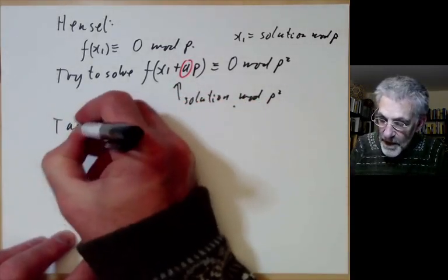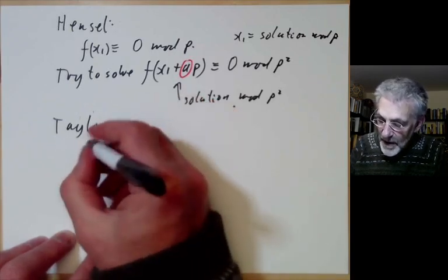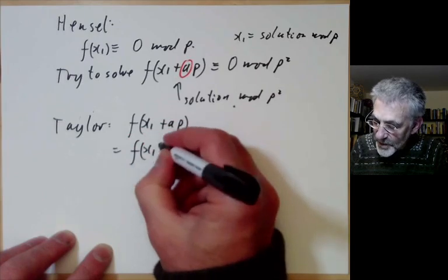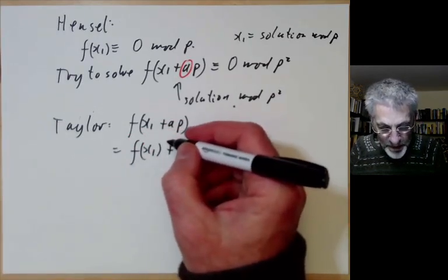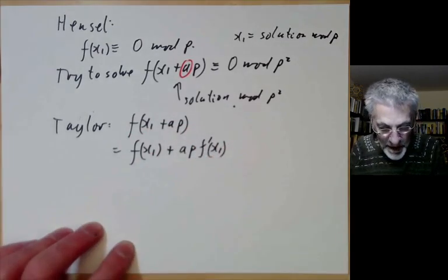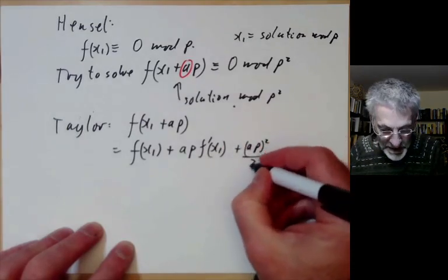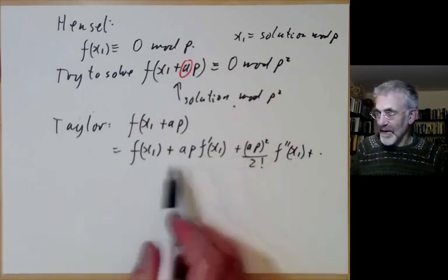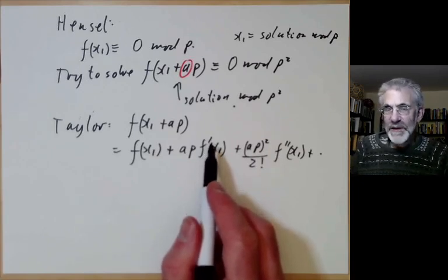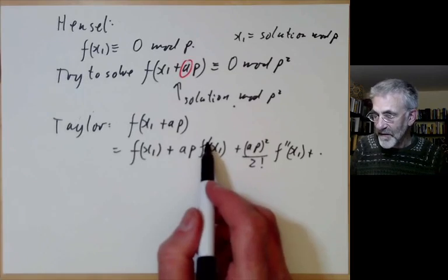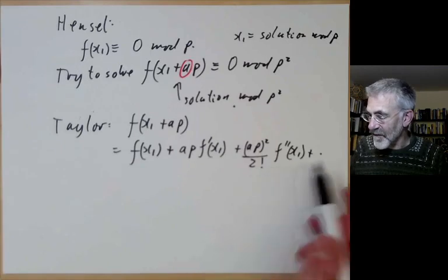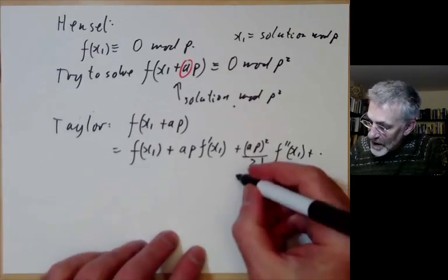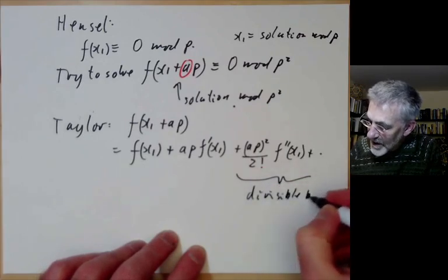Let's apply Taylor's theorem: f(x₁ + ap) = f(x₁) + ap·f'(x₁) + (ap)²/2! · f''(x₁) + ··· . For a polynomial f, we can define derivatives perfectly well, and this formula works as a finite series. The terms beyond the second are divisible by p², so we need the first two terms to vanish mod p².